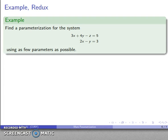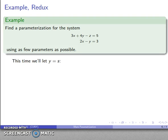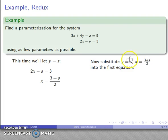I don't have to use that particular parameterization. What if I like fractions? I can still start with the equation which has just two variables and choose one of them to be our parameter. I'll let y equals s. And my second equation, 2x minus y equals 3, becomes 2x minus s equals 3. I'll solve this for x. Now I have y equals s, x equals 3 plus s over 2.